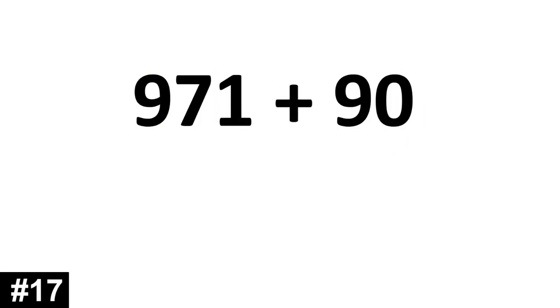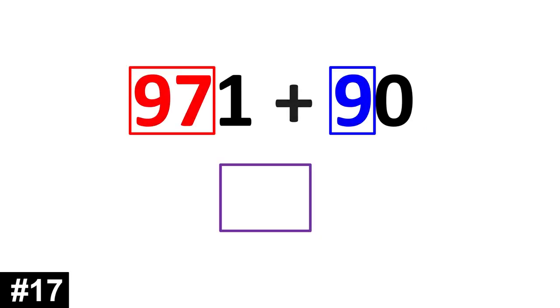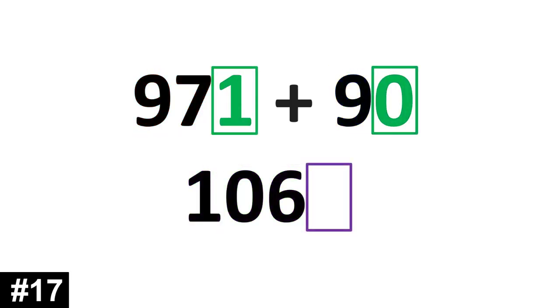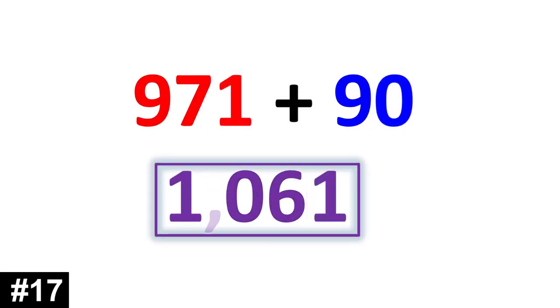How about 971 plus 90? 971 has 97 tens that we add to the 9 tens of 90. 97 plus 9 is 106. We add the ones. 1 and 0 gives us 1. 1061.